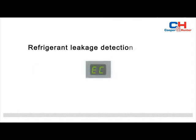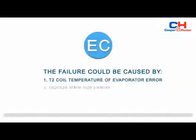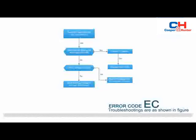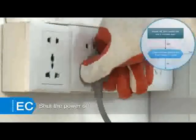When the indoor unit displays EC, that indicates a refrigerant leakage detection error. The failure could be caused by: 1) T2 coil temperature of evaporator error, 2) indoor main PCB error, or 3) refrigerant system error.